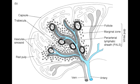Now let's zoom in further and talk about the sinusoids of the spleen. Sinusoids of the spleen are long vascular channels in the red pulp with a fenestrated barrel-hoop basement membrane. Macrophages are located near this area.